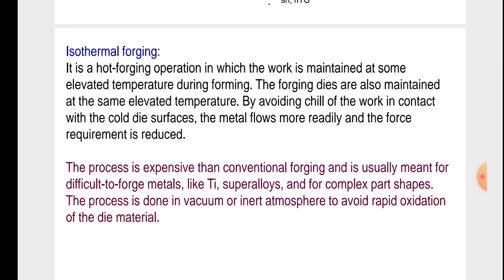Isothermal forging is a hot forging operation in which the work is maintained at some elevated temperature during forming. The forging dies are also maintained at the same elevated temperature. By avoiding the chilling of the work in contact with cold die surfaces, the metal flows more easily and the force requirement is reduced. The process is more expensive than conventional forging and is usually meant for difficult-to-forge metals like titanium superalloys and for complex part shapes. The process is done in vacuum or inert atmosphere to avoid rapid oxidation of the die material.